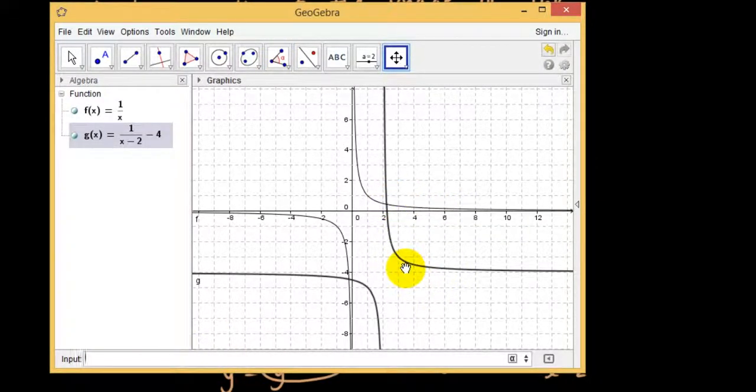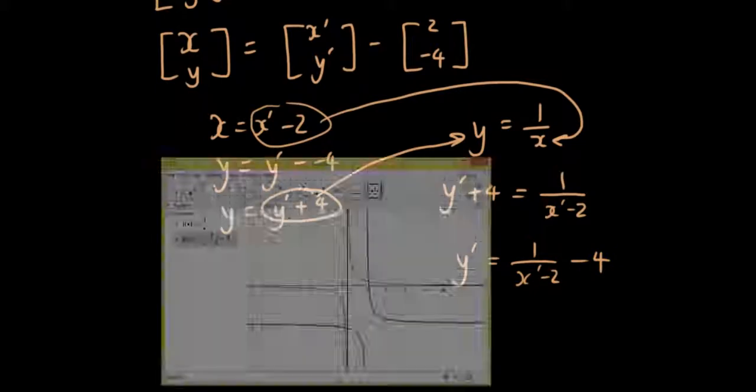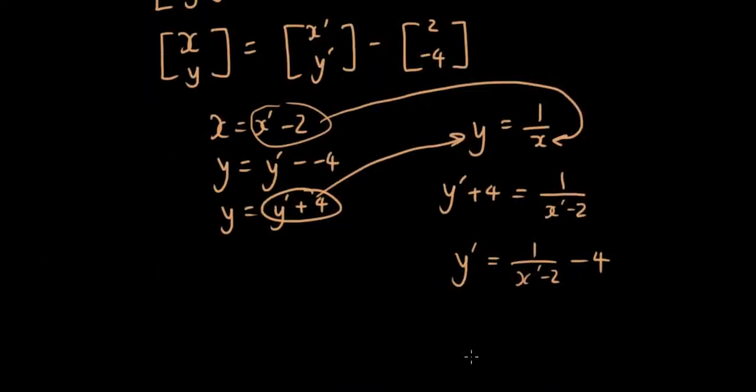And now it's translated it and it's giving me the formula for the image: 1 over x' minus 2 minus 4. Is that what I have? 1 over x' minus 2 minus 4. Yes, exactly the same. Thanks for watching guys. See you next time.